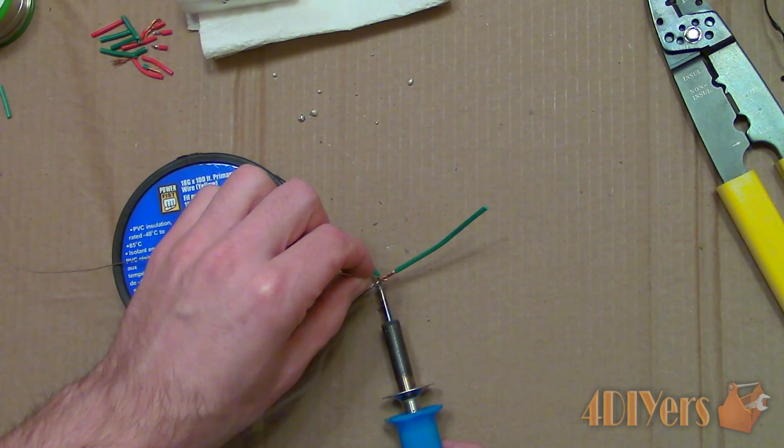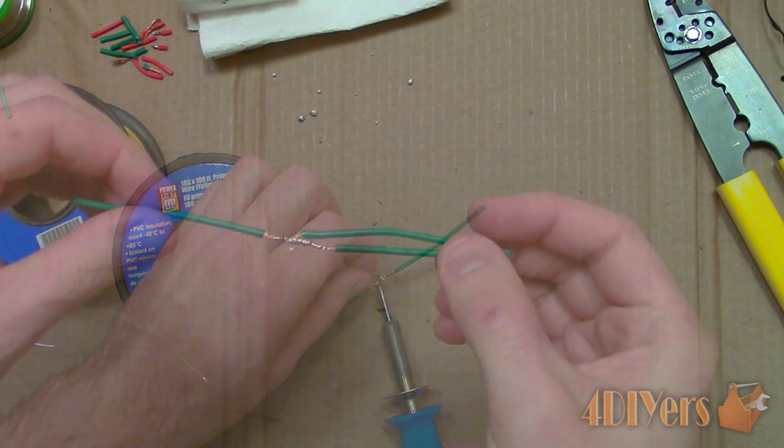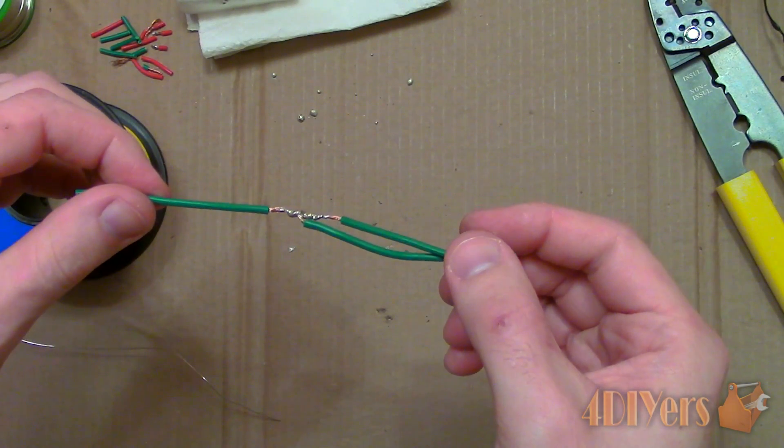Again, ensure the soldering iron tip is tinned, heat up the joint and then apply the solder to the connection. Finally, this is the final product.